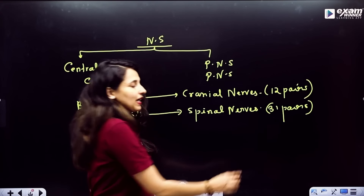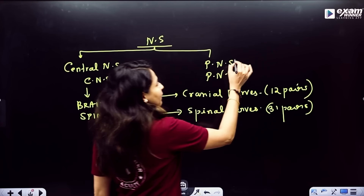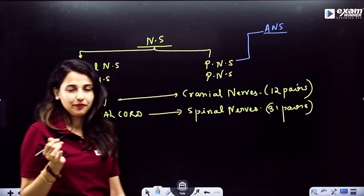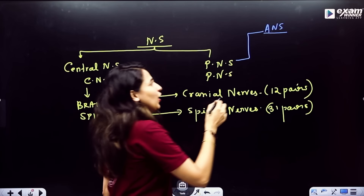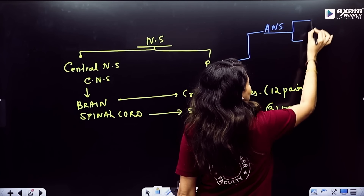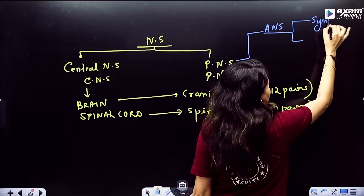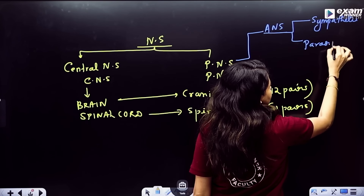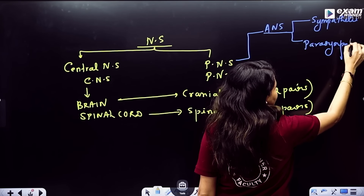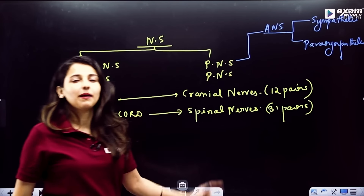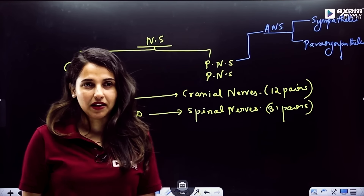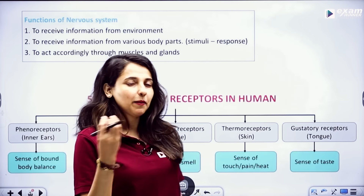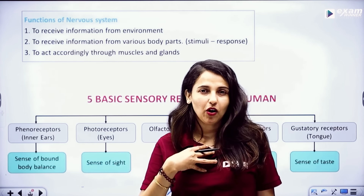The peripheral nervous system includes the sympathetic and parasympathetic nervous system. The sympathetic nervous system is for emergency conditions. That is the peripheral nervous system. The nervous system is the first to respond to stimuli in the body.